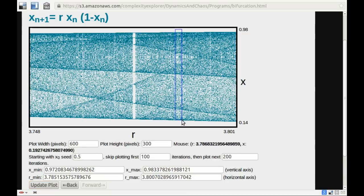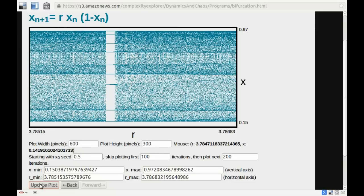If I zoom in even more, this little slice here, there is yet another periodic window. That's a window of period 9.